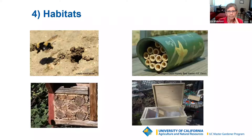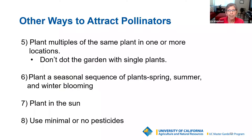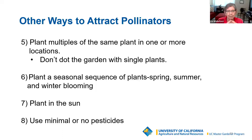Here are the last four ways to attract pollinators: plant multiples of the same plant in one or more locations — don't dot the garden with single plants; give the pollinators something to work with. Plant a seasonal sequence of plants for spring, summer, and winter blooming so they have access to pollen throughout the season. Always plant in the sun if you're trying to attract pollinators. And use minimal or no pesticides.